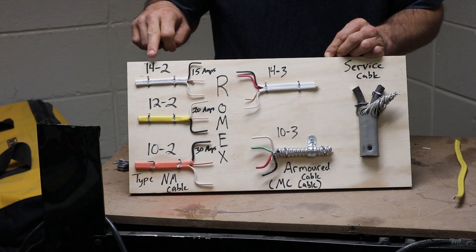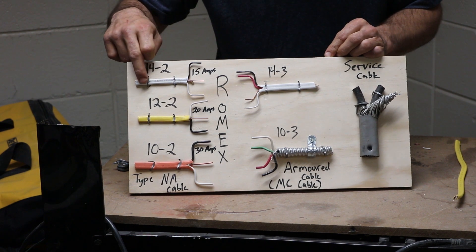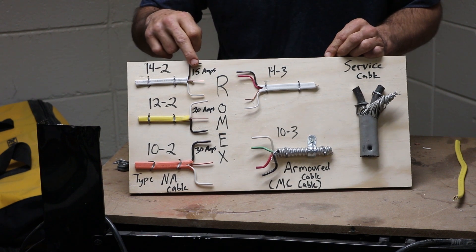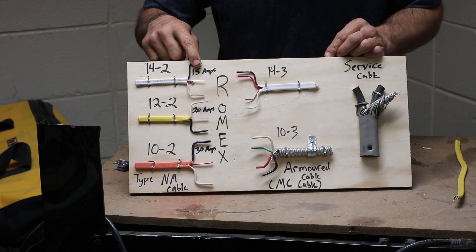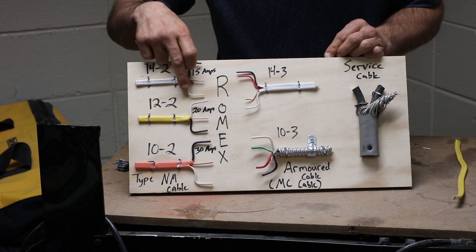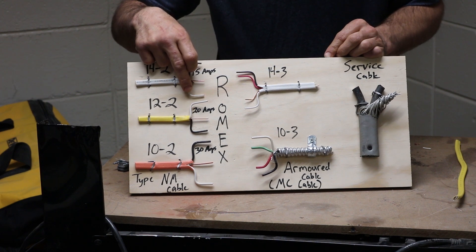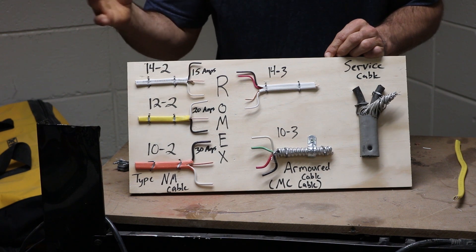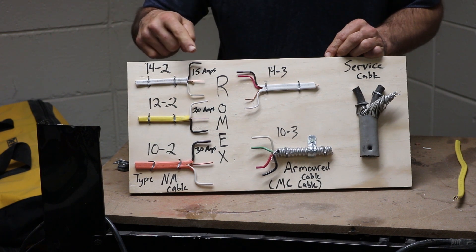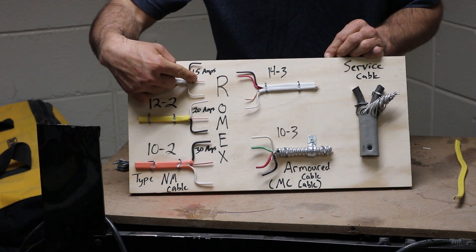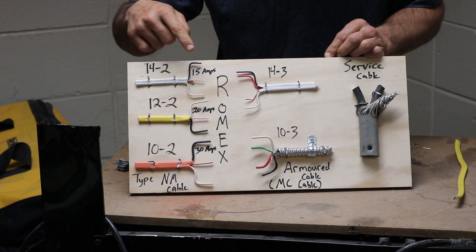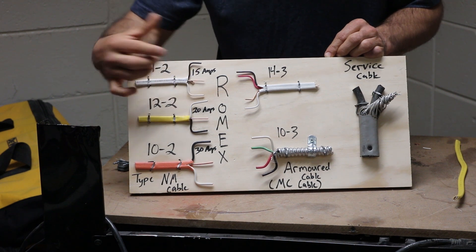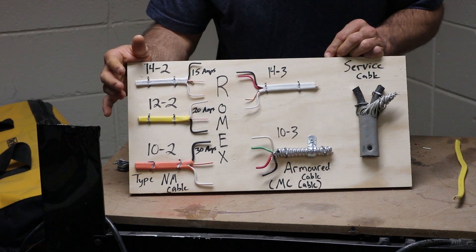If you notice right here, I wrote 14-2. 14-2 means it's 14 gauge wire and there are two conductors, so you have a black and a white. Your black is your current carrying conductor, and then the white is your grounded conductor. And then you have your grounding conductor, which is also known as the ground. In the field, this would be your hot, this would be your neutral, that would be your ground. NEC code: current carrying conductor, grounded conductor, grounding conductor. So that can get somewhat confusing there.